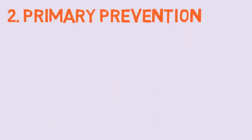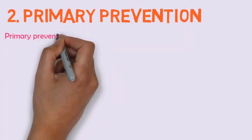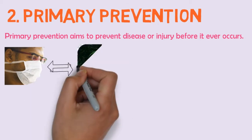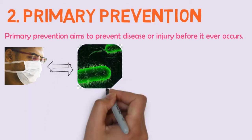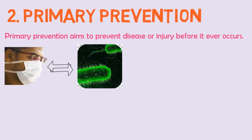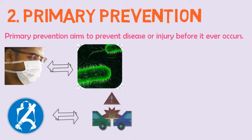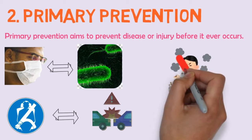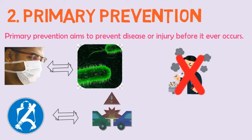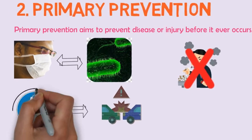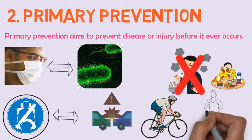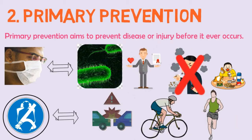Next, we have primary prevention. Primary prevention aims to prevent disease or injury before it ever occurs. This is done by preventing exposures to hazards that cause disease or injury and increasing resistance to disease or injury should exposure occur. Examples include legislation and enforcement to ban or control the use of hazardous products such as tobacco, or mandate safe and healthy practices such as the use of seatbelts and bike helmets, education about healthy and safe habits such as eating well and exercising regularly, and immunization against infectious diseases.